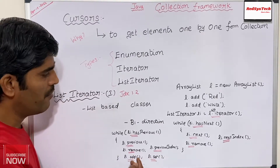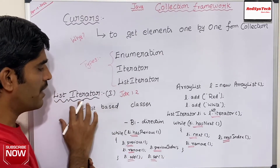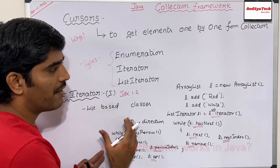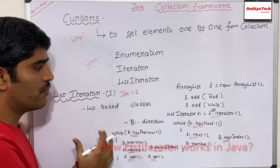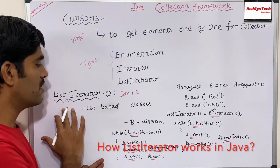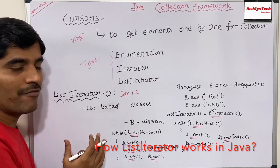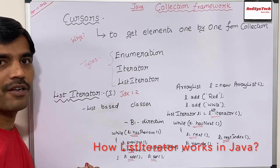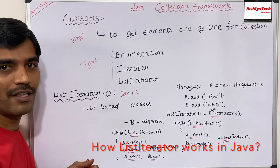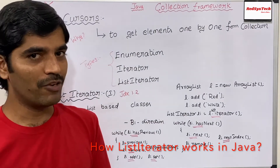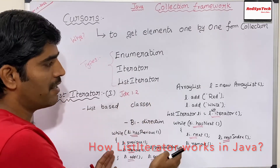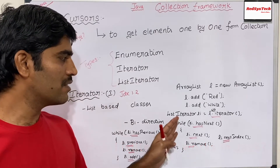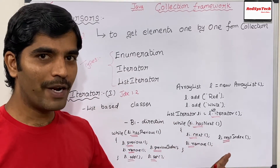They call ListIterator a bi-directional iteration because it can navigate either forward as well as backward. The only disadvantage with ListIterator is that it is mainly used only for list-based classes — you cannot use it universally for all other collection framework classes. I'm going to write a program to show how we can use this ListIterator to navigate forward as well as backward.